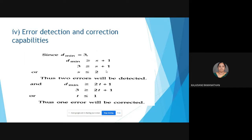Error detection and correction capability: since d_min = 3, substituting into d_min ≥ s + 1 gives 3 ≥ s + 1, so s ≤ 2, meaning it can detect 2 errors. For error correction using d_min ≥ 2t + 1, we get 3 ≥ 2t + 1, so t ≤ 1, meaning it can correct 1 error.